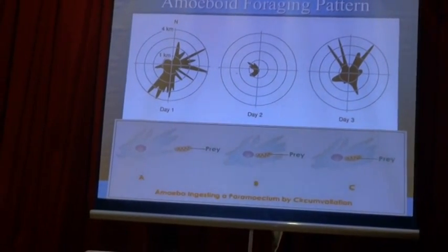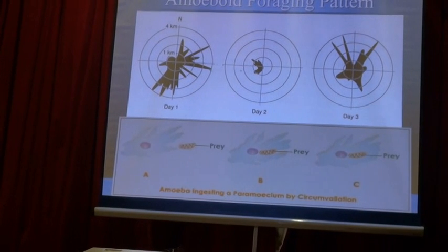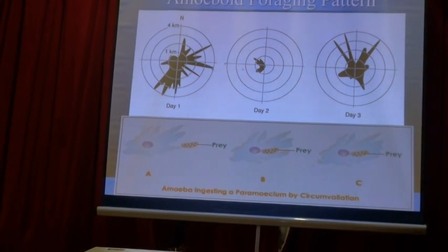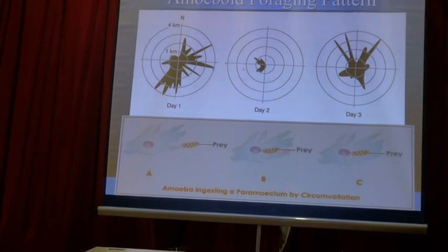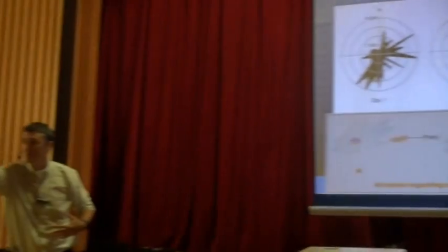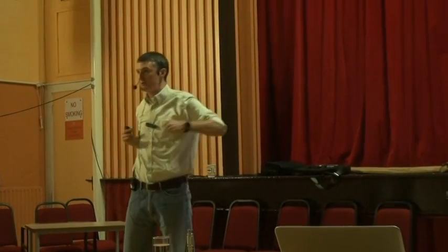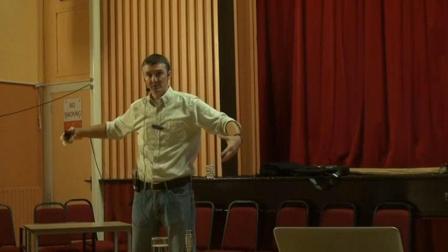We call this an amoeboid foraging pattern because this is the same way amoeba — single-cell organisms — forage. They reach out their gelatinous appendages, grabbing whatever prey they can find, and when they find that prey, they bring it back into the central cell to digest it. And this is how all social insects forage: they reach out with groups of bees, wasps, ants, or termites, gather whatever food source is available, constantly reaching in all directions, pulling things into the center where the nest is to digest it collectively.